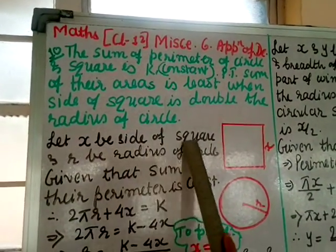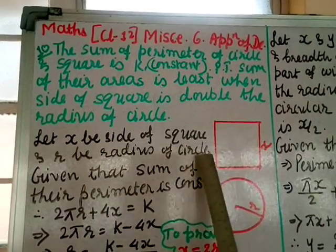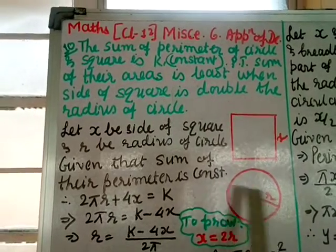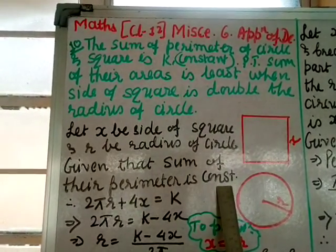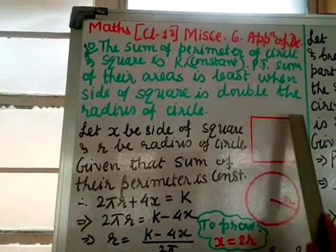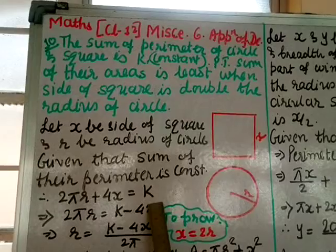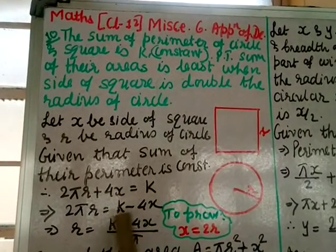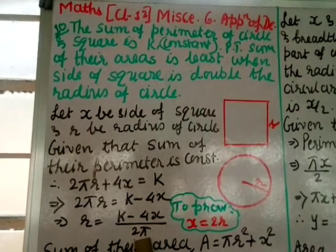Let x be the side of a square and r be the radius of a circle. Given that the sum of their perimeters is constant: perimeter of a circle is 2πr and perimeter of a square is 4x, so 2πr + 4x = k. Transferring 4x: r = (k − 4x) / 2π.